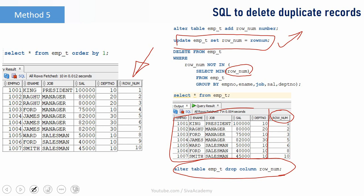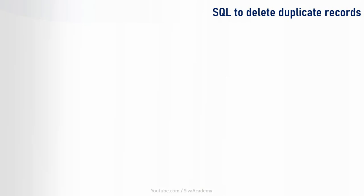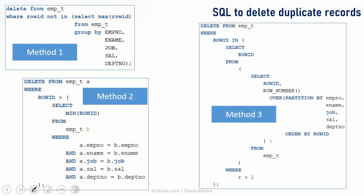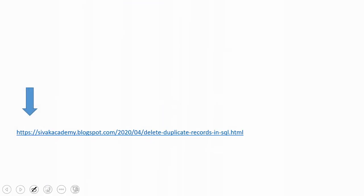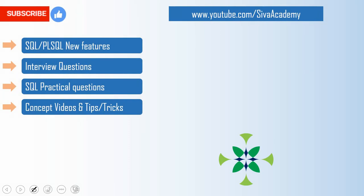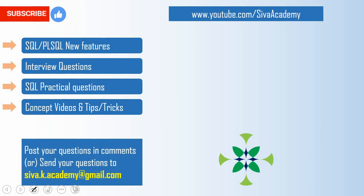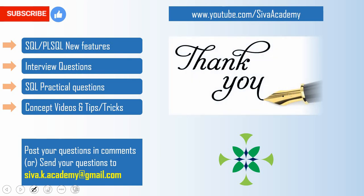This is one of the most asked interview questions, so I suggest you practice clearly before going to an interview. To summarize the three main methods: Method 1 uses a simple subquery with MAX(ROWID) and NOT IN; Method 2 uses a correlated subquery; Method 3 also uses a simple subquery but with the ROW_NUMBER() analytical function instead of MAX. All queries are posted in the blog link — you can copy and try them yourself. If you learned something new, please like this video, subscribe, and stay tuned. Post any questions in the comment section or send to the mail ID. Thanks for watching!